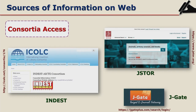Access to information through consortia means institutions come together and share their resources. JSTOR and JGate are commercial consortia where you can get journal articles and books, but these are priced and subscribed to by libraries. There was also the INDEST consortium for AICTE institutions, which is now merged into eShodha Sindhu — it was earlier a consortium for engineering colleges, science, technology, and management institutions, and is now part of eShodha Sindhu.